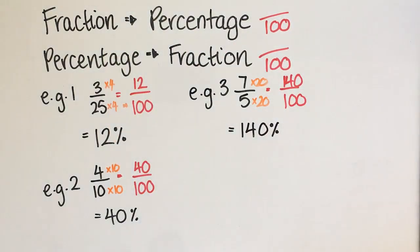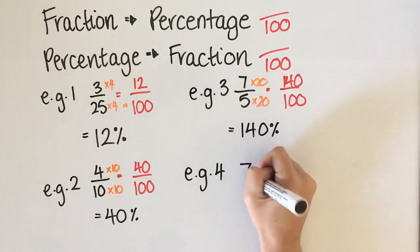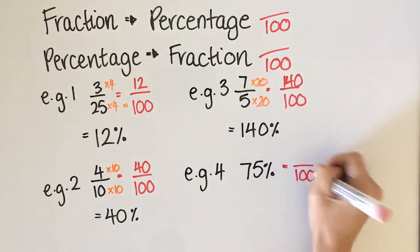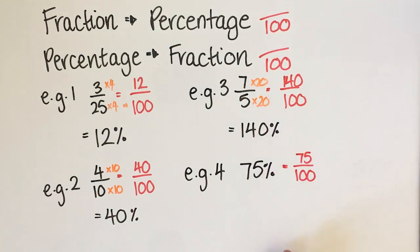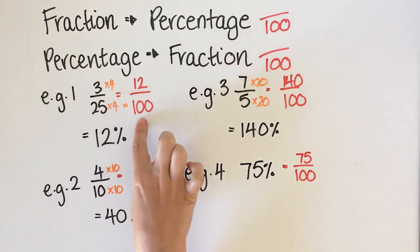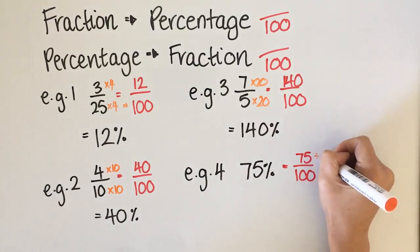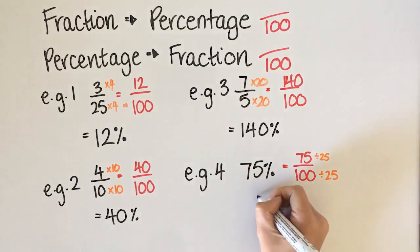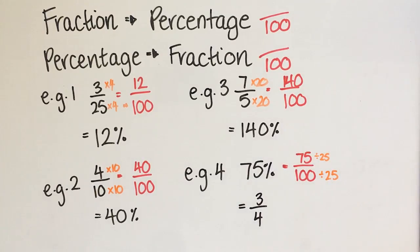Now going the other way: percentage to a fraction. Starting with 75% — I put it over 100, giving 75 over 100. Now I need to simplify. I think of a number that goes into both 75 and 100; 25 is the highest common factor. 25 goes into 75 three times, and 25 goes into 100 four times. So I get three quarters.